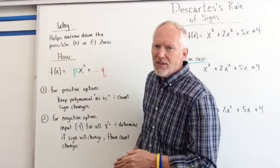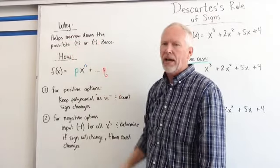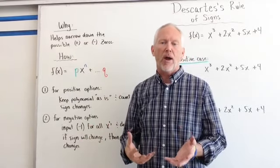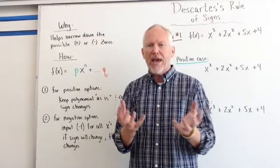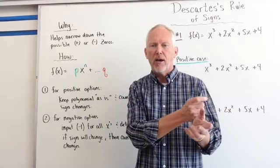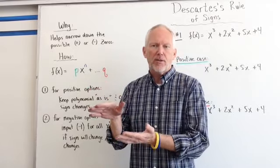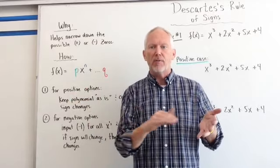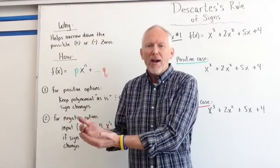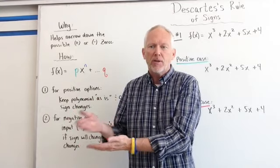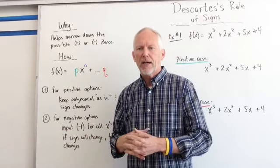So let's see what it is. Here are the basics. It helps narrow down the possible positive or negative zeros. For instance, when I go to synthetic division from the rational zero theorem, I'm trying different x values — will that x create a zero in f(x)? I could try a list of positive possibilities, then a list of negatives. But if the function only has one negative zero, once I find it, there's no use looking for other negative options. Using Descartes' Rule of Signs really helps narrow down those options.